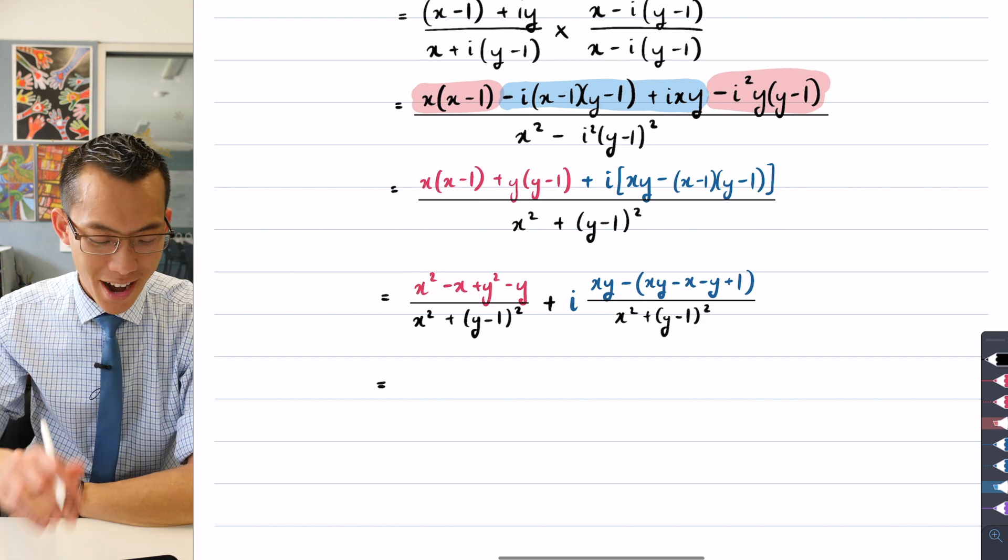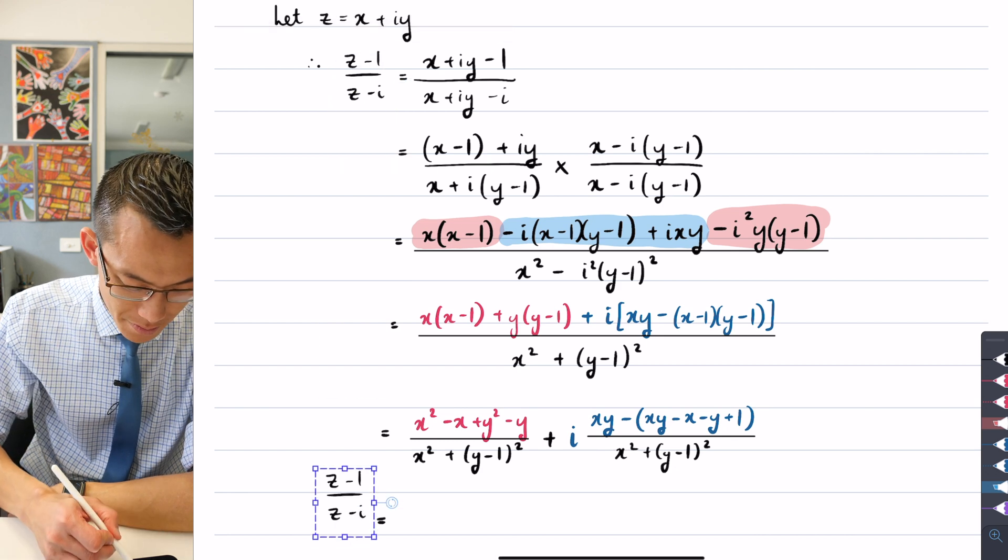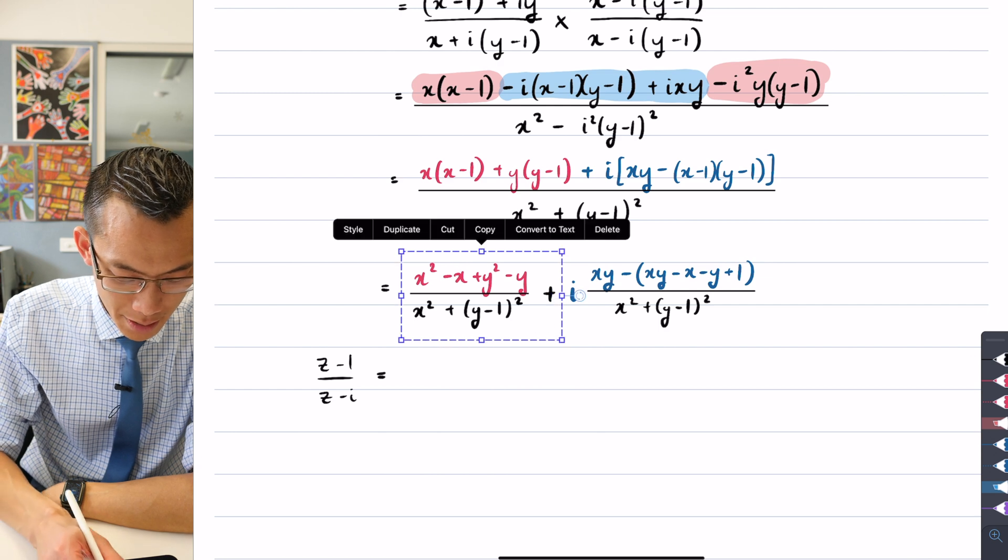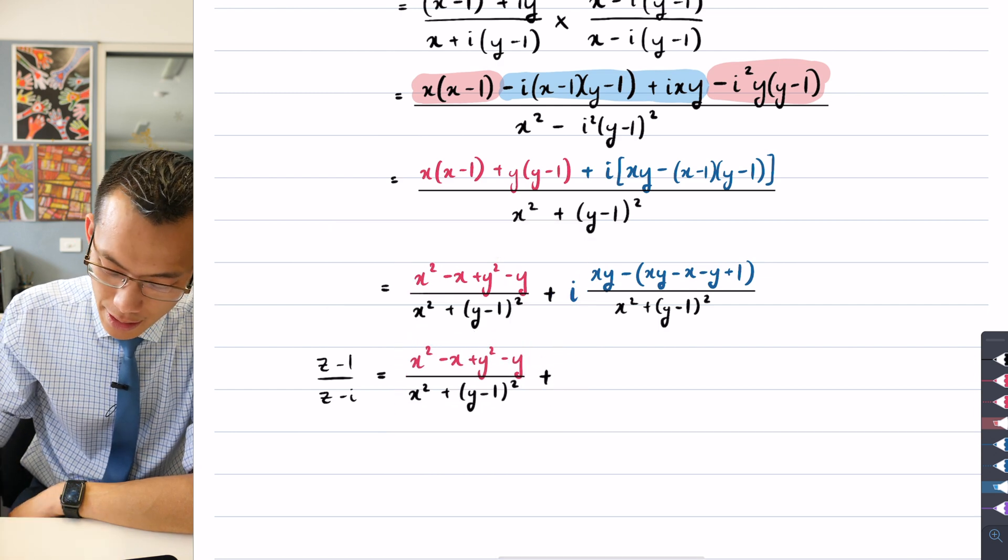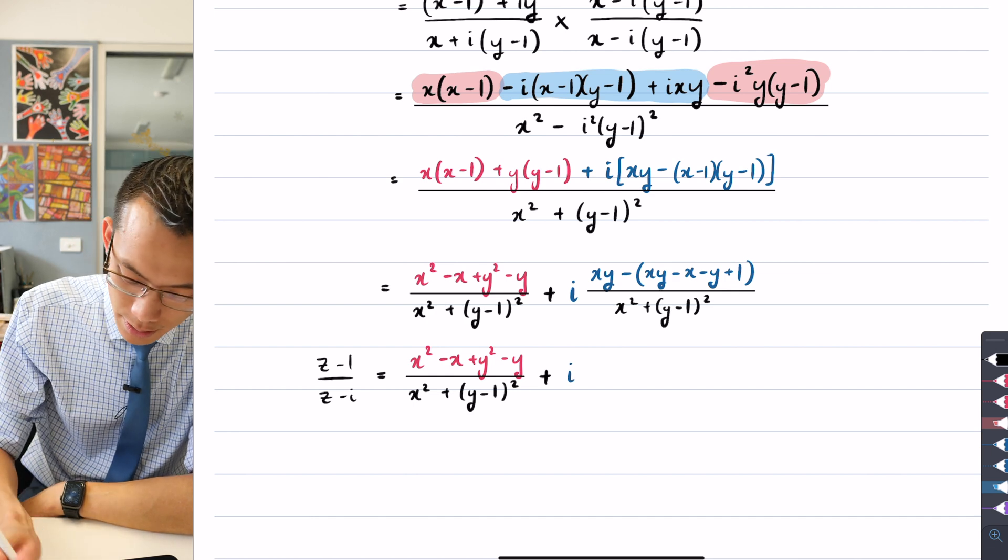Okay, I'm almost there. This is me taking this, and I've got the real component, I'm happy with how that's been simplified. And then over here with the imaginary component, you can see that my xys, I'll use purple, my xys are going to cancel.